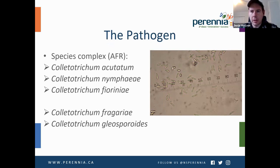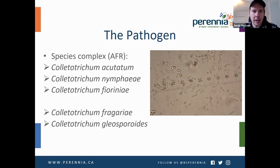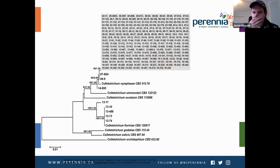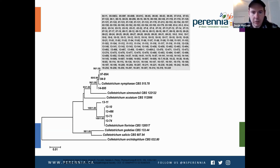A little bit about the pathogen. Anthracnose is caused by a few different pathogens in the Colletotrichum genus. There's a species complex that causes anthracnose fruit rot, including Colletotrichum acutatum, Colletotrichum nymphae, and Colletotrichum fioriniae. There's also Colletotrichum gloeosporioides. This is a photo of what the spores of Colletotrichum look like under the microscope, and this is a phylogeny of the Colletotrichum species.